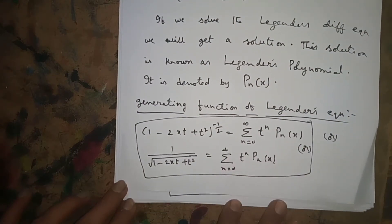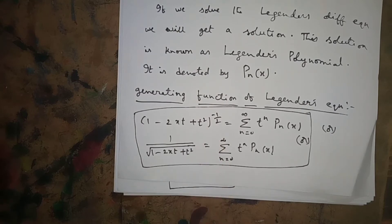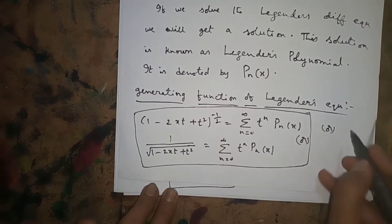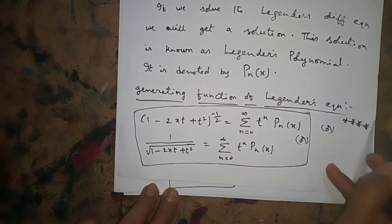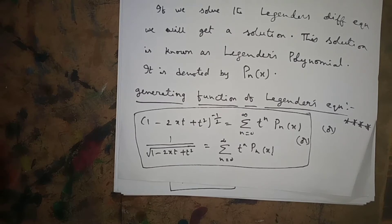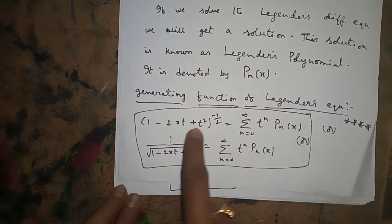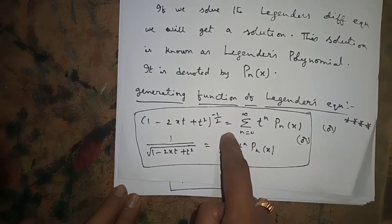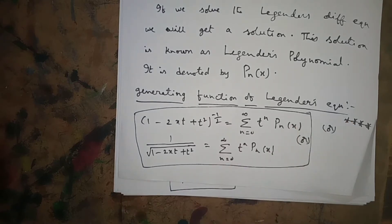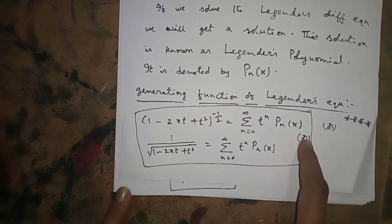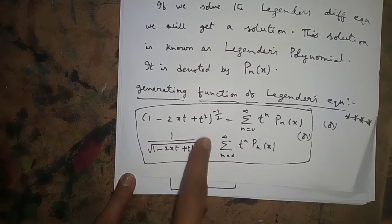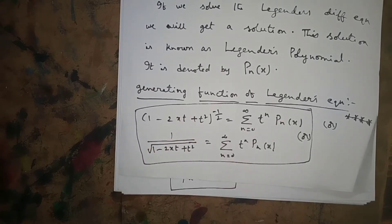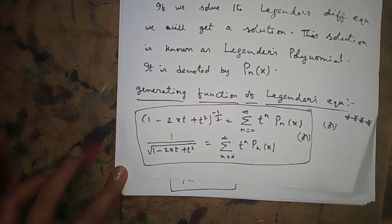After that, we have one very important formula — the generating function of Legendre's Differential Equation. Just like a formula, you have to remember this to do the remaining problems. The generating function is: 1 minus 2xt plus t squared, whole to the power of minus 1 by 2, is equal to sigma n equals 0 to infinity of t to the power n into Pn of x. In other words, 1 over the square root of 1 minus 2xt plus t squared equals this series. This is called the generating function.